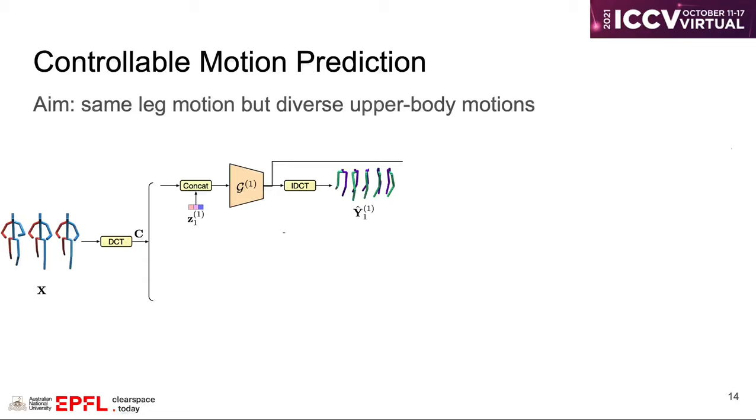Thanks to our end-to-end trainable generator, it is easy to extend our model to new applications such as controllable motion prediction. The goal of controllable motion prediction is to predict motions with same leg motion but diverse upper-body motion.